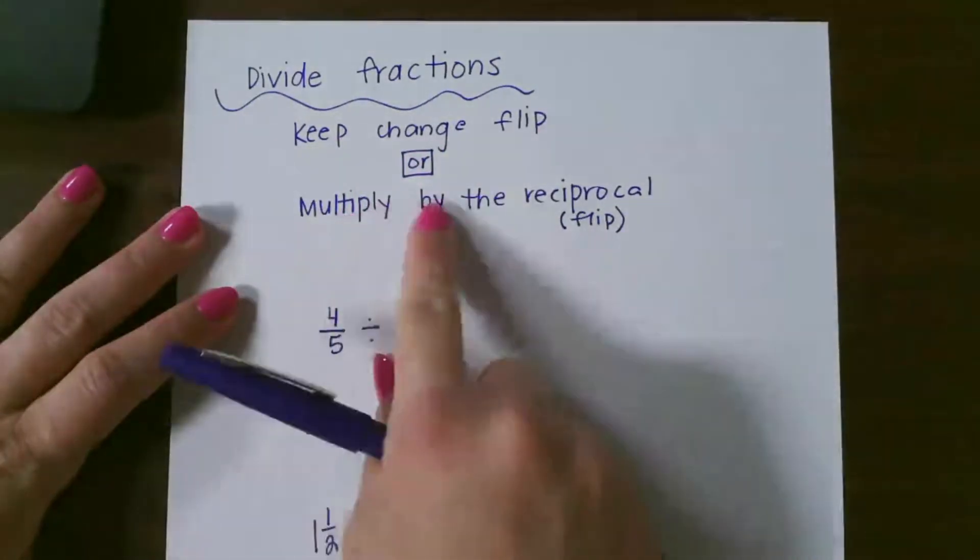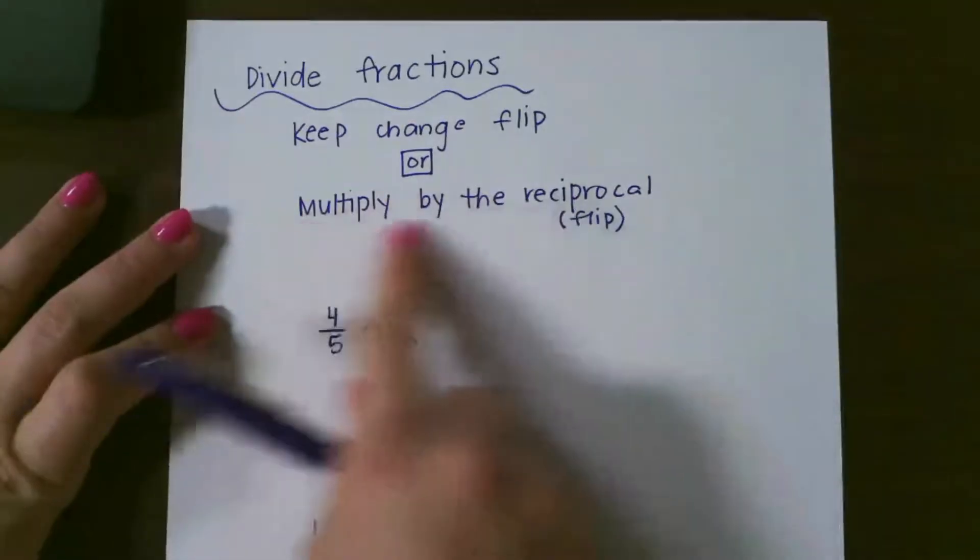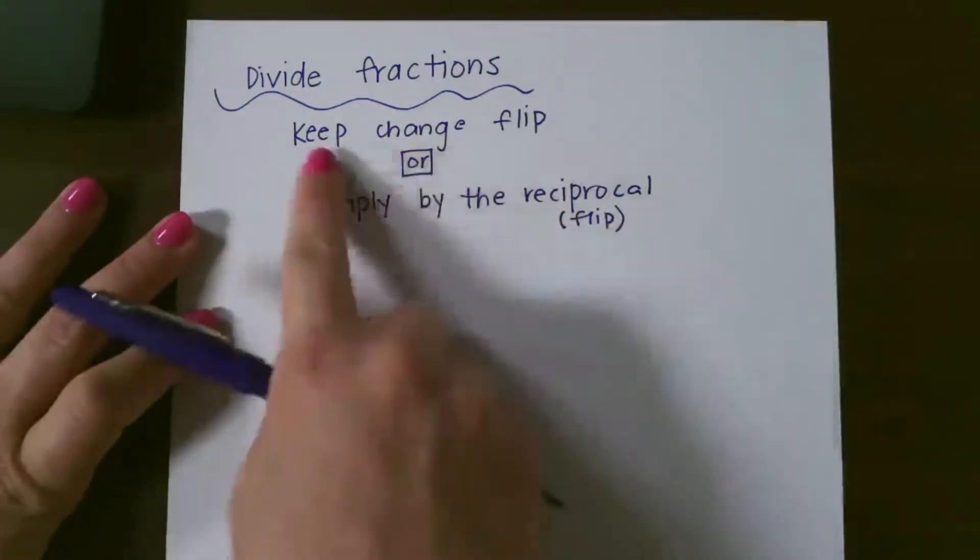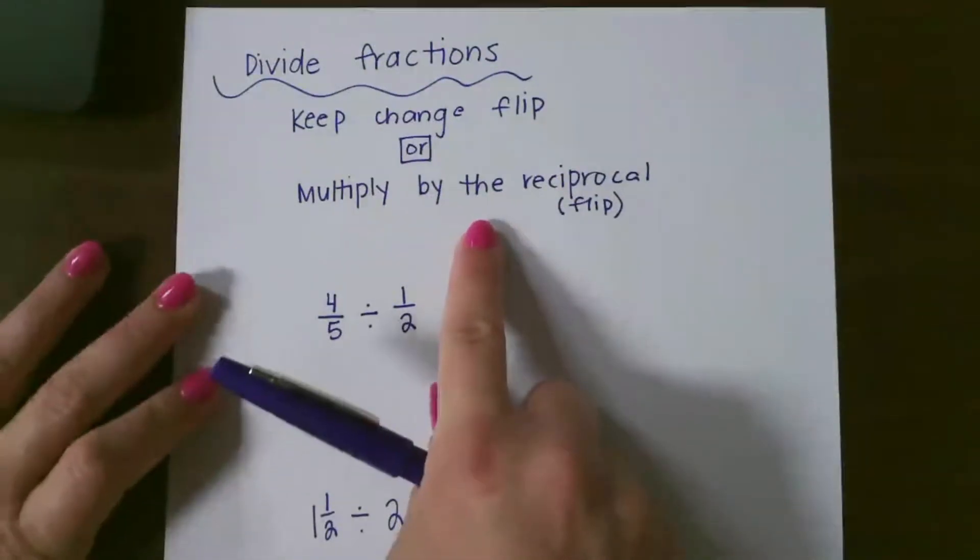Or multiply by the reciprocal, and reciprocal just means to flip. This is the mathematic way to remember it. This is just a little shortcut way, but this one's better to remember, so multiply by the reciprocal.